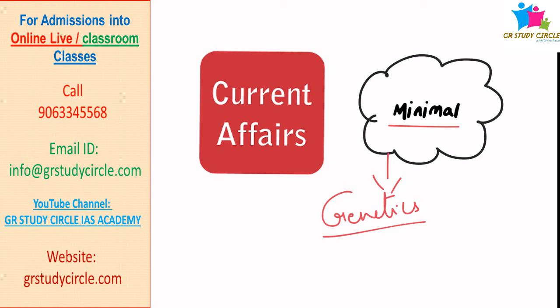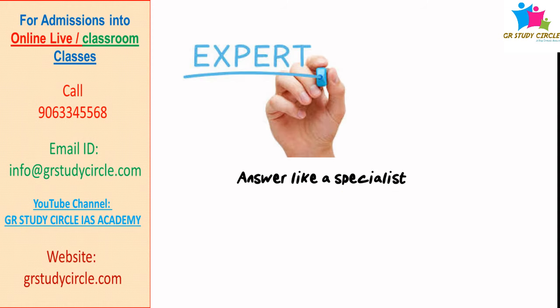Most students score around 210 to 220. Only the student who makes this extra effort can gain 300 plus. Please note down the latest technologies coming in science and the tribals who are in the news.